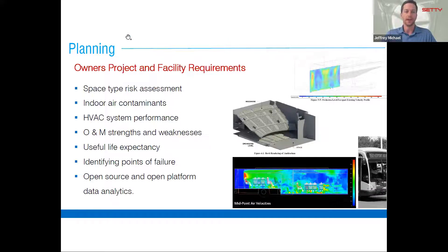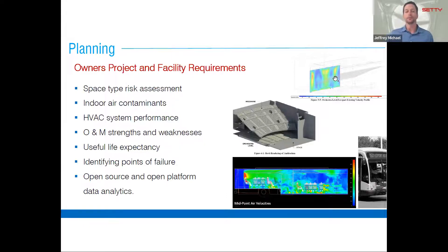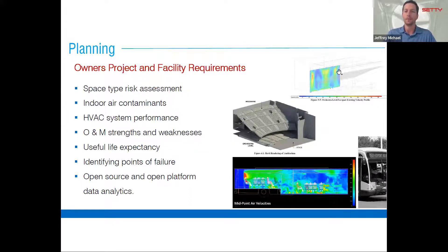From an indoor air quality perspective, we really want to start by looking at the types of spaces and how various space types present various risks. Some CFD modeling we've done over the past couple of years illustrates this well — for a large box theater, we wanted to understand how the distribution system affected airflow patterns. In this theater, supply air originated from the top and return air was taken back by openings in the floor below the seats, similar to an airplane. We found that performance from this airflow system was very good for containment of aerosols from person to person.